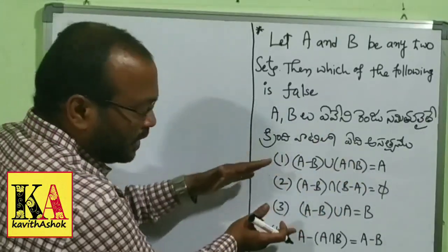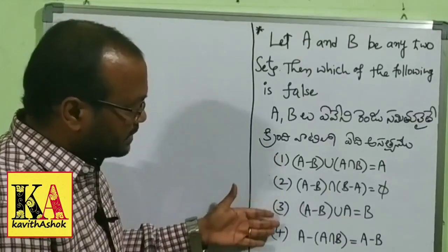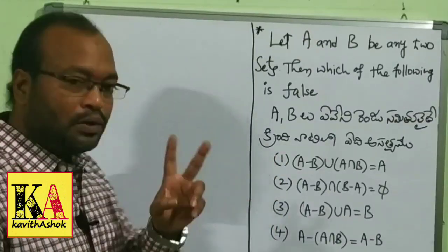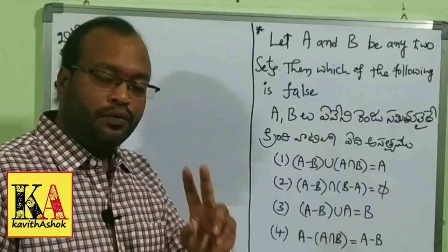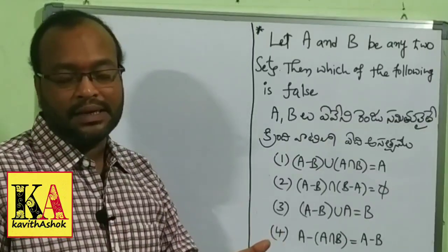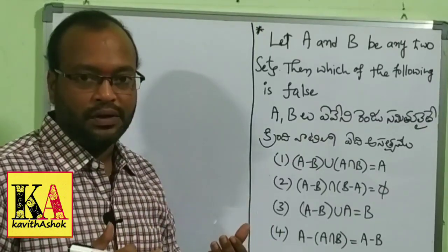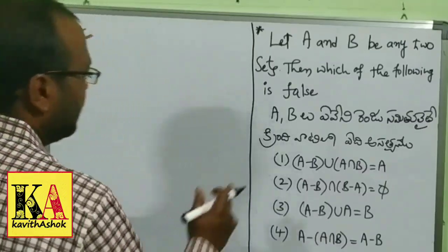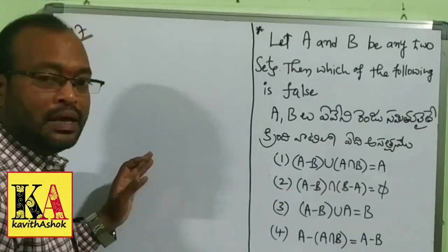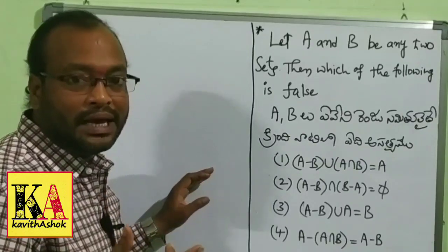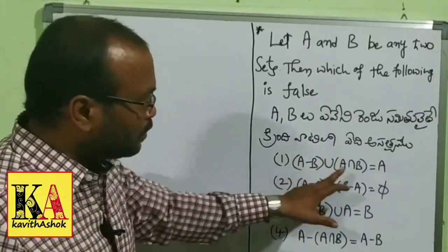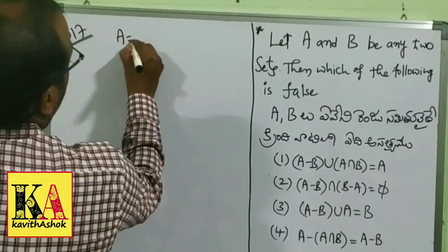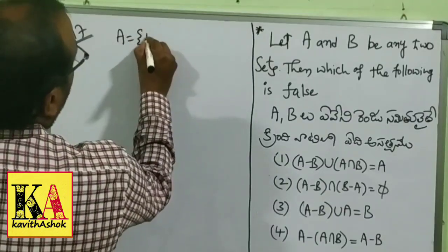We have four options. Among these four conditions, which one is false? There are two approaches — from an examination point of view, you should choose the verification method, also called the example method. So, if you have a problem with A and B, select specific values for A and B.